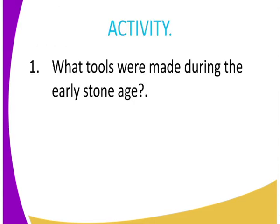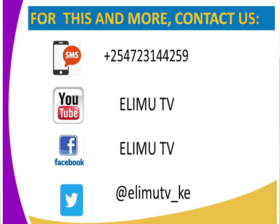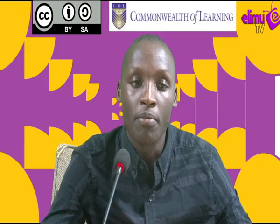Learners, your assignment is to state the tools that were made during the Old Stone Age — remember there were two phases, the first and second phase. For reference, please use the Evolving World History textbook, Oxford University Press, sixth edition. Get in touch with us on Elimu TV via YouTube, Facebook, Twitter, and our SMS line. Thank you so much.